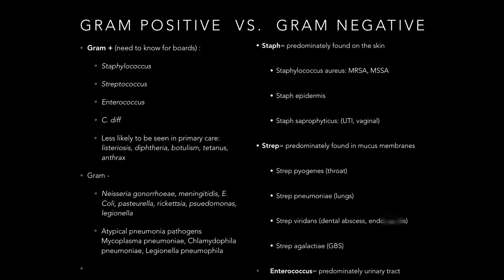Staph, Strep, Enterococcus, C. diff — and then it's safe to assume the others are gram negative. Staph is predominantly going to be found on the skin, and that is a lot of our skin infections. Strep is usually found in the mucous membranes — for example, strep throat. And Enterococcus is typically found in the urinary tract.